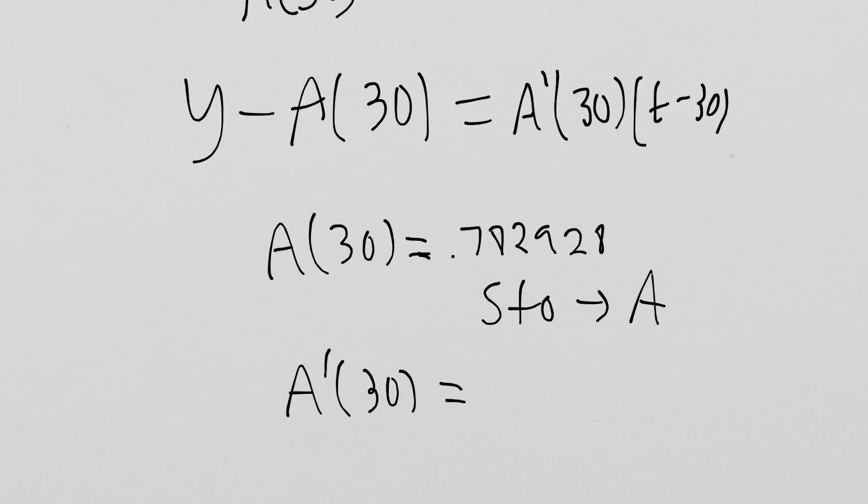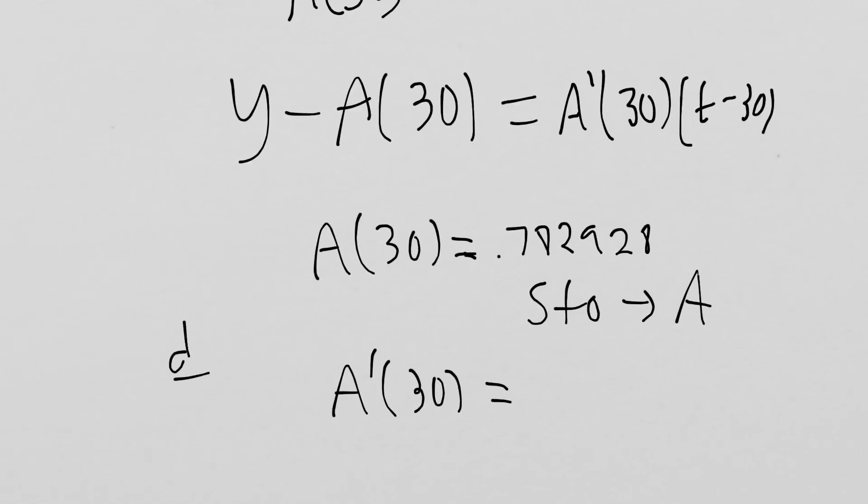Then A'(30), which you just do d/dx of Y1 at x equals 30 of the original function, that's going to be -0.055976.